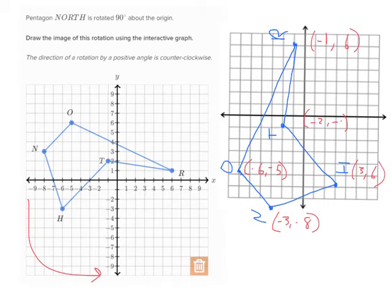Literally I'm just going to go okay, N is at negative 3 negative 8, there's my new N. O is at negative 6 negative 5. R is at negative 1, 6. T is at negative 2 negative 1. And we said H is over here at 3 negative 6. Now I could just connect my dots and on Khan they're going to connect these dots for me automatically anyway.